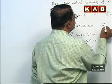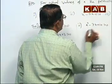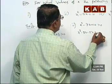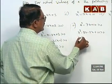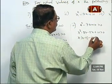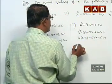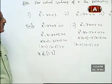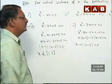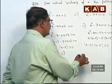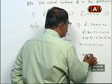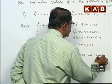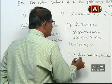Second bit: x squared minus 7x plus 10 greater than 0. x squared minus 7x can be written as minus 2x minus 5x plus 10, greater than 0. Taking x common in first two terms: x(x minus 2). Taking minus 5 common: minus 5(x minus 2), greater than 0. So (x minus 2)(x minus 5) greater than 0. Then x does not lie between 2 and 5.